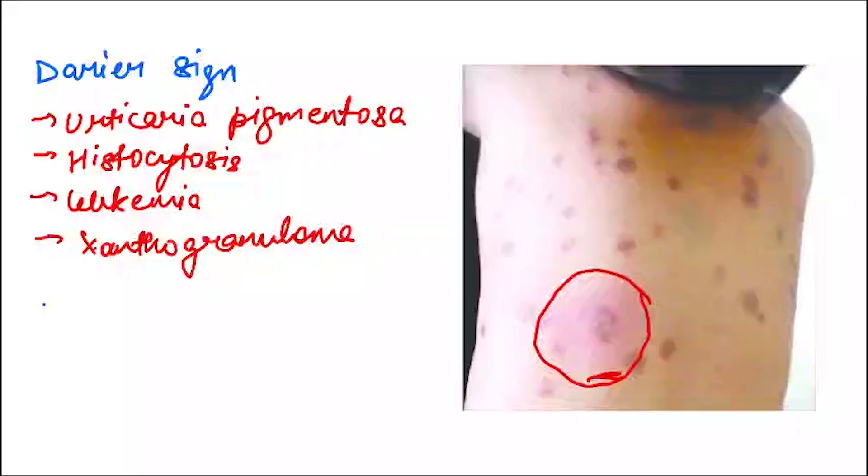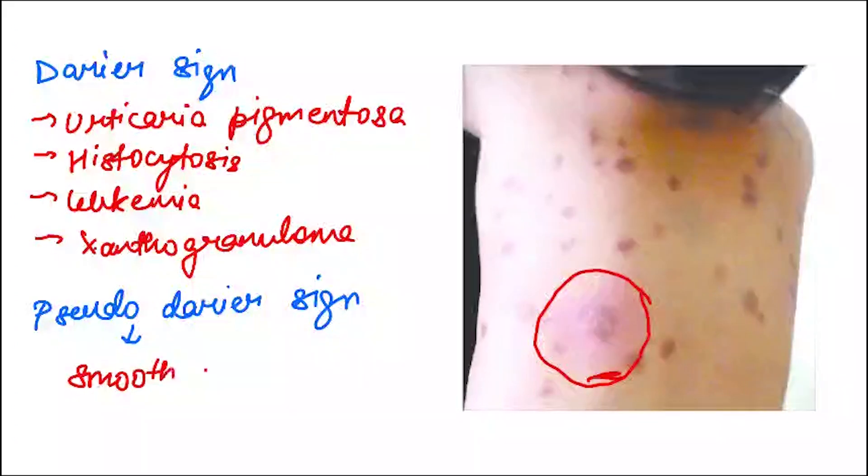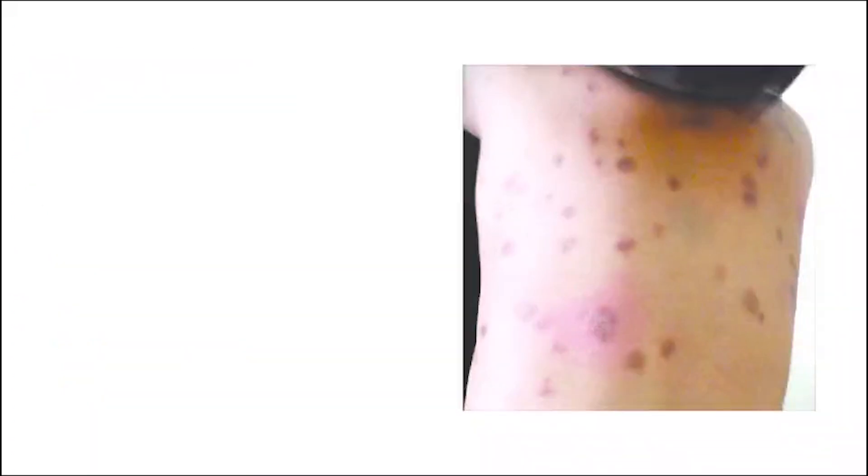Here I will tell you about pseudo-Darier sign. Here you will not be seeing an urticarial lesion. Rather, there is a transient firmness of lesion due to piloerection. It is seen in smooth muscle hamartoma. To revise: Darier sign in case of urticaria pigmentosa, histocytosis, leukemia, and xanthogranuloma. Pseudo-Darier sign in case of smooth muscle hamartoma.